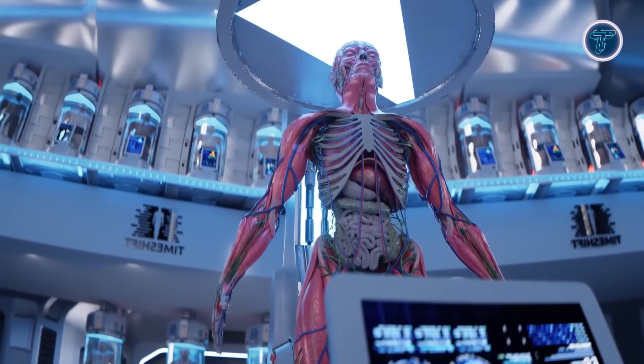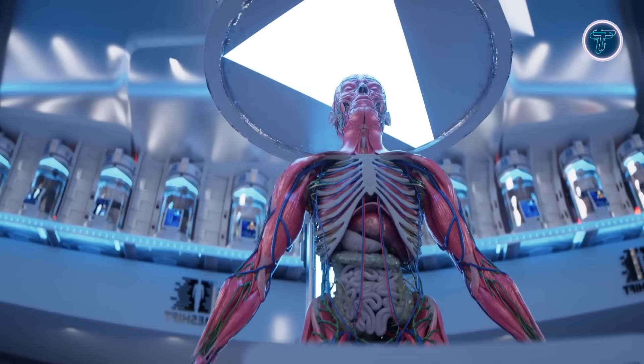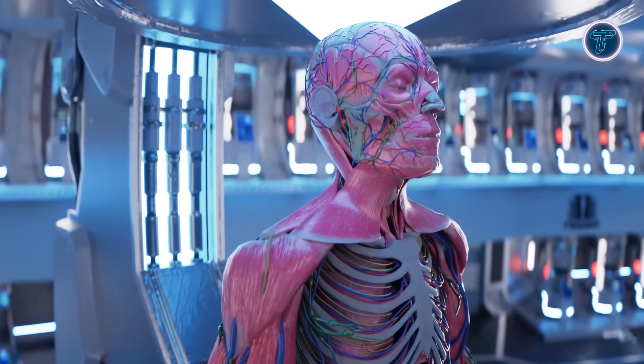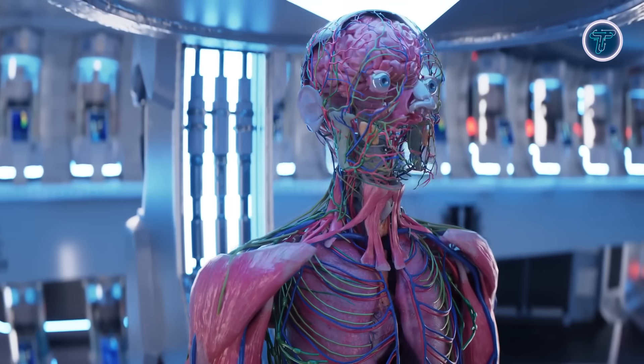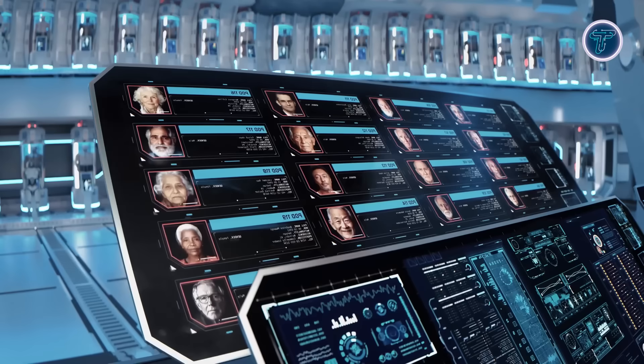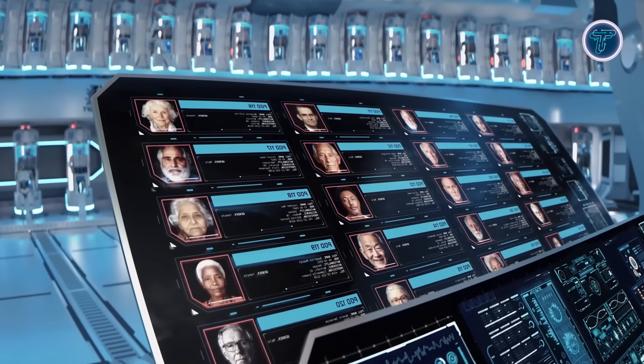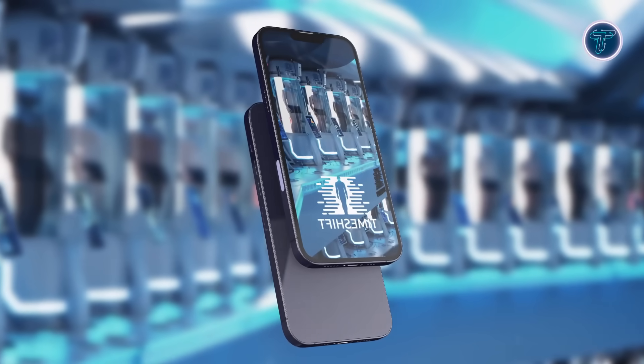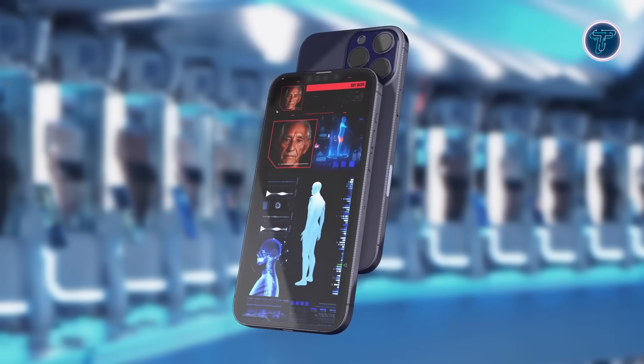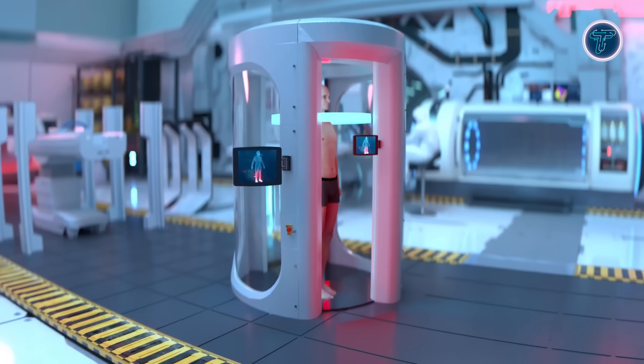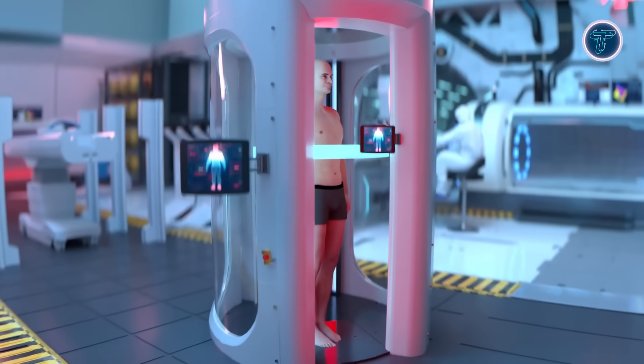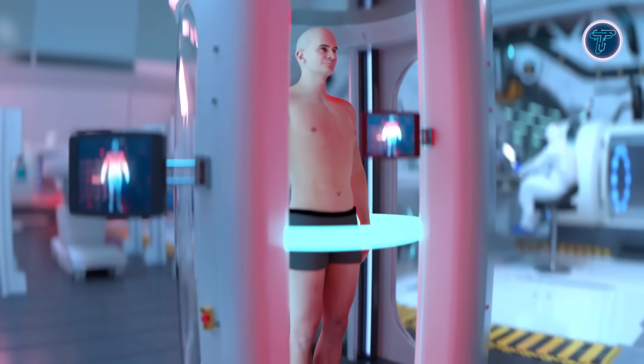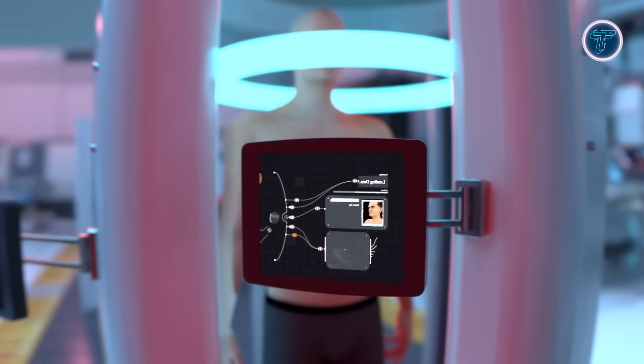The process involves gradually cooling subjects to minus 196 degrees Celsius using cryoprotectants, gas mixtures and electromagnetic fields to prevent ice damage. Intelligent systems continuously monitor internal conditions for stability. For revival, advanced electromagnetic resonance techniques are used under regulated pressure. Timeshift also offers pre-cryostasis enhancements like gene therapy and cellular repair to improve survival chances.